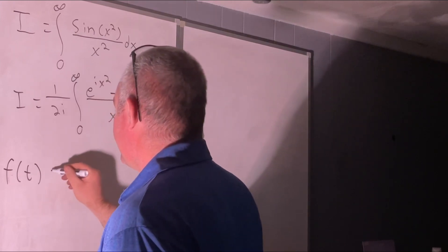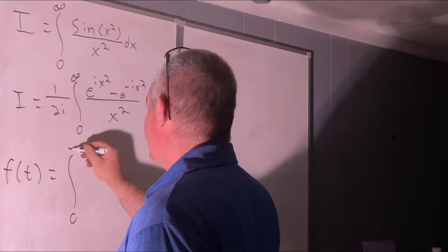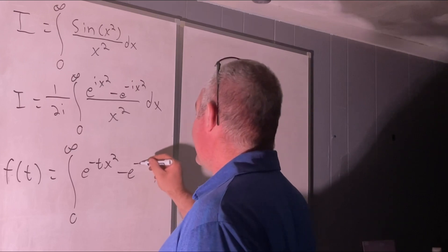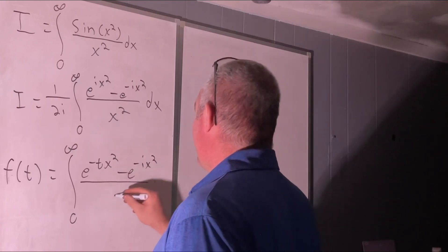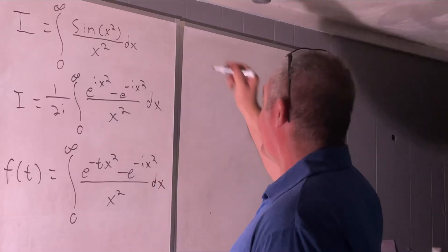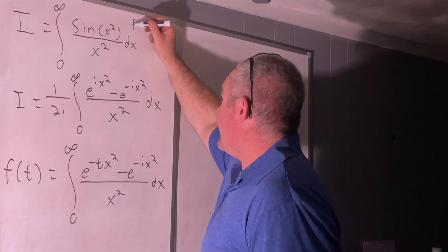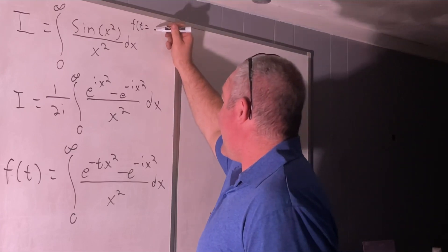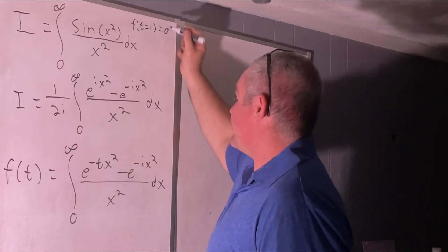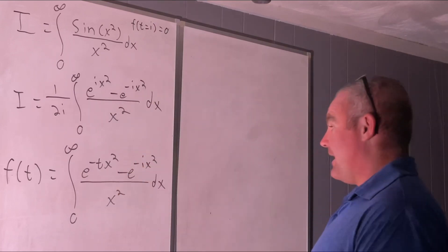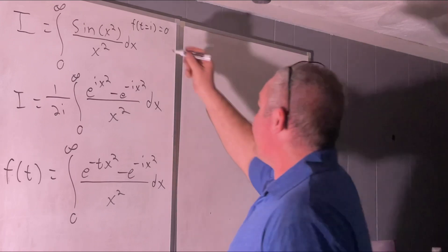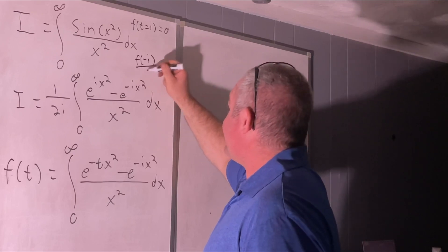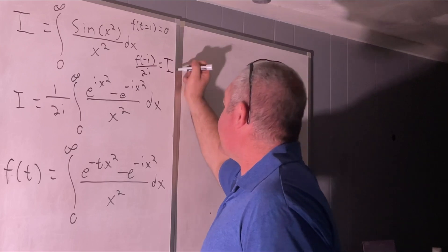Create a function of t equal to the integral from 0 to infinity of e to the negative tx squared minus e to the negative ix squared over x squared dx. We note that if we evaluate f at t equals i, we get 0 because we'd have e to the negative ix squared minus e to the negative ix squared, which is 0. And if we evaluate our function at negative i and then divide by 2i, we recover our original integral.